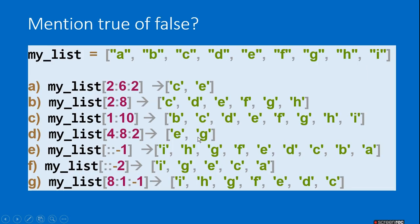my_list = ['A','B','C','D','E','F','G','H','I']. Find my_list[2:6:2]. Here 2 is the start position, 6 is the stop position, and 2 is the step. The answer is ['C', 'E'].